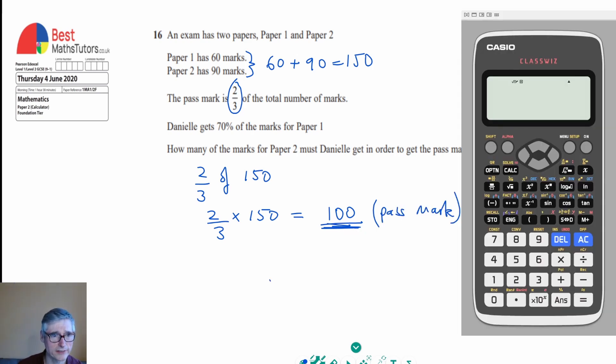So my next job is to work out what mark did she actually get on paper 1 if she got 70% of the marks on paper 1. So I need to find out what is 70% of the marks on paper 1. And paper 1 was 60 marks. So 70% of 60.